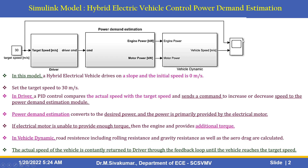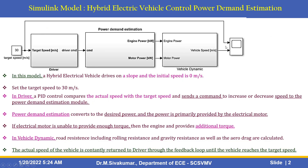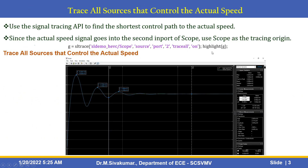These are the Simulink model of the hybrid electric vehicle control power demand estimation model. Next, how to trace all the sources that control the actual speed? By using the signal tracing API to find the shortest control path to the actual speed. Since the actual speed signal goes to the second input of the scope, we use the scope as the tracing origin.